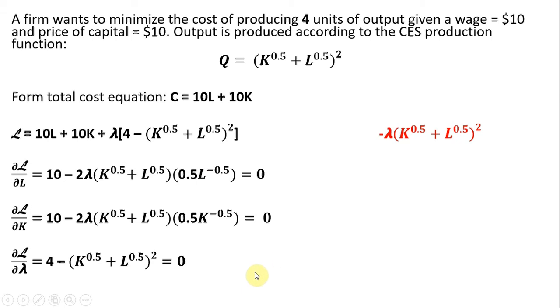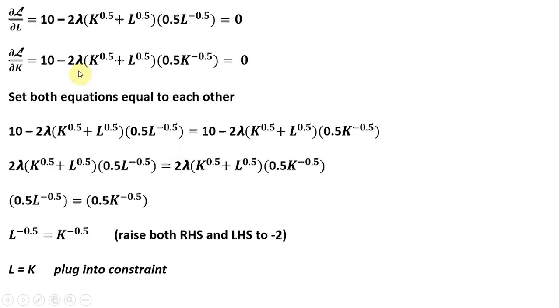All right, so we're ready to proceed. Next thing here, I'm just rewriting the partial derivatives. And maybe the easiest thing here to do, since each equation is equal to zero, just set both equations equal to one another. So I do that down here, setting both of those partial derivatives equal to one another.